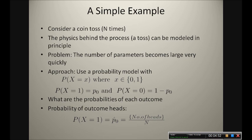The toss output can have only two outcomes, that is either heads or tails. So we model it with a variable x that belongs to the set with only two elements, 0 and 1, where 0 stands for tails and 1 stands for heads. The probability that x equals 1 is p-naught, and probability that x equals 0 is 1 minus p-naught. Since there are only two possible outcomes, there is only one unknown value, p-naught. The goal is to find the probabilities of each outcome. Experimentally, we can determine an estimate of p-naught by counting the number of heads and dividing by the total number of times the coin is tossed. Hence, by using a probability model, it is possible to understand a deterministic process and also make predictions about it.